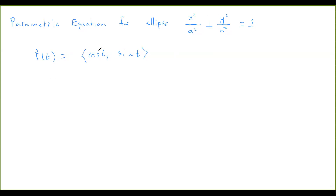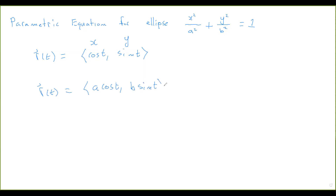Notice that here the x-coordinate squared plus the y-coordinate squared is equal to 1 — that's what a circle is. x-squared plus y-squared equals r-squared. For the ellipse, we need x-squared over a-squared plus y-squared over b-squared equals 1. So the way that we adjust this — we can make a few guesses, but I'll save you the time — we just call this a·cosine t, b·sine t.